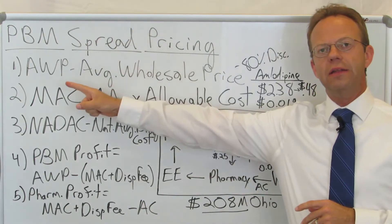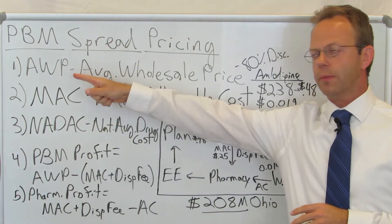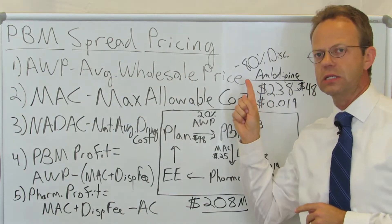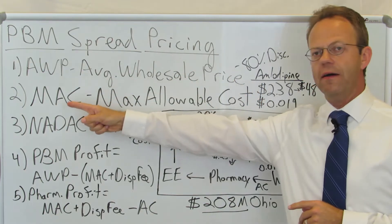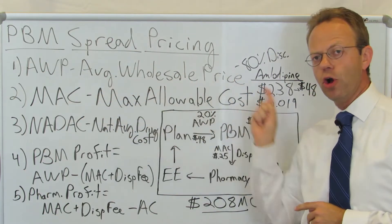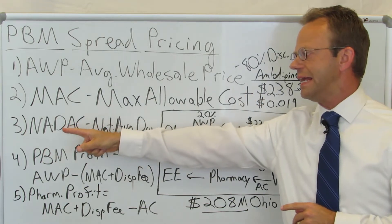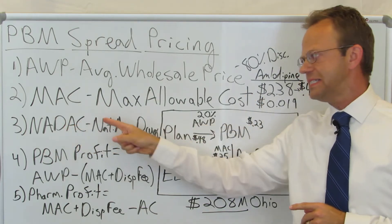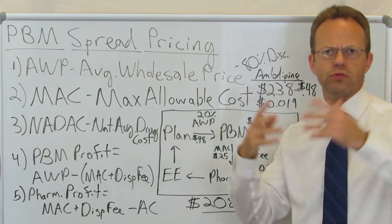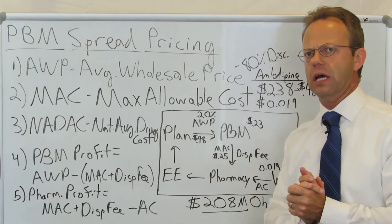This involves a number of acronyms. Starting with number one, the AWP, which is the average wholesale price. Then we have the MAC, or the maximum allowable cost. And thirdly we have the NADAC, which is the national average drug cost, or just what's referred to as the acquisition cost sometimes.